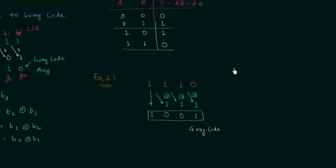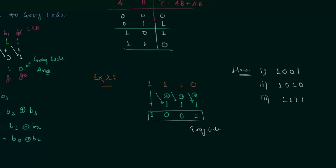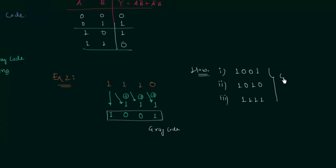I have homework problems for you. In the first homework problem, the binary number is 1 0 0 1; in the second, the binary number is 1 0 1 0. Convert them to grey code and post your answers in the comment section. I will also upload the solution on our website nesoacademy.org. So this is all for this lecture — see you in the next one.